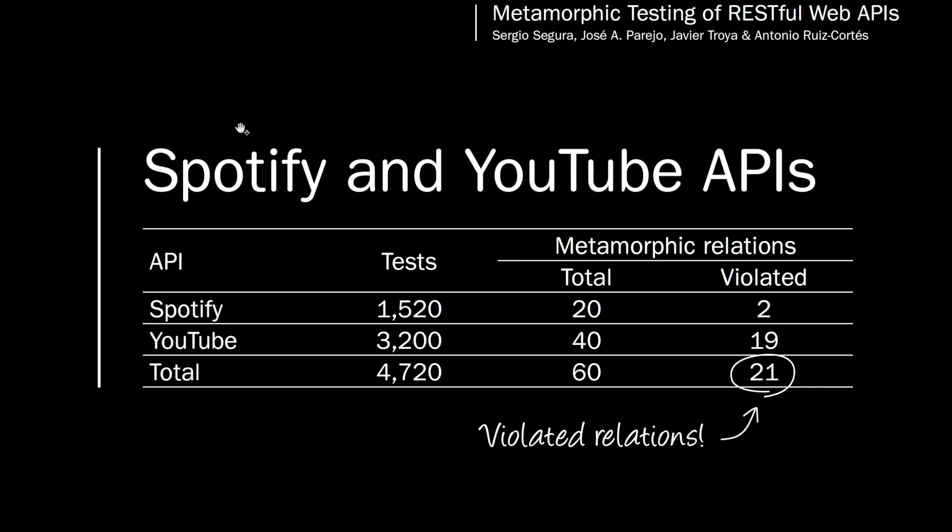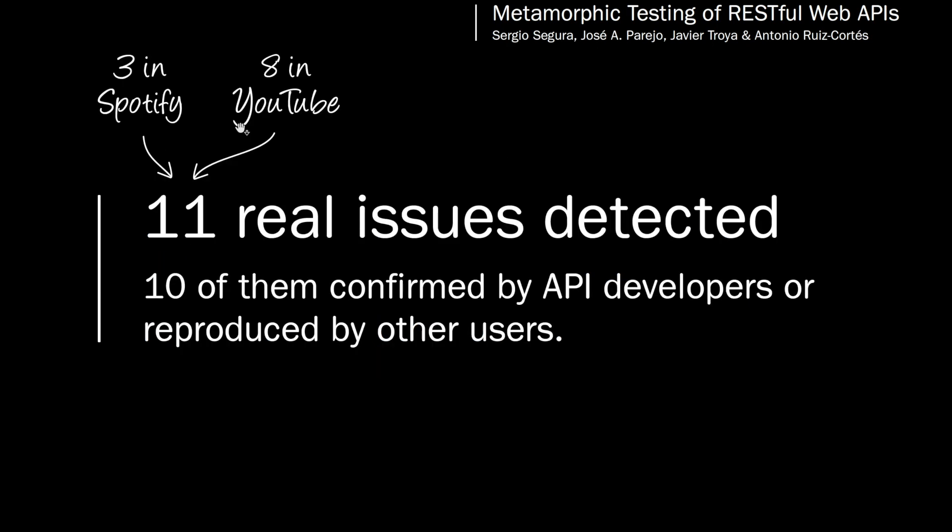In the Spotify API, 20 metamorphic relations were identified, and in YouTube, 40. Of these, 21 relations were violated, and as a result, 11 issues were detected — 3 in Spotify and 8 in YouTube.